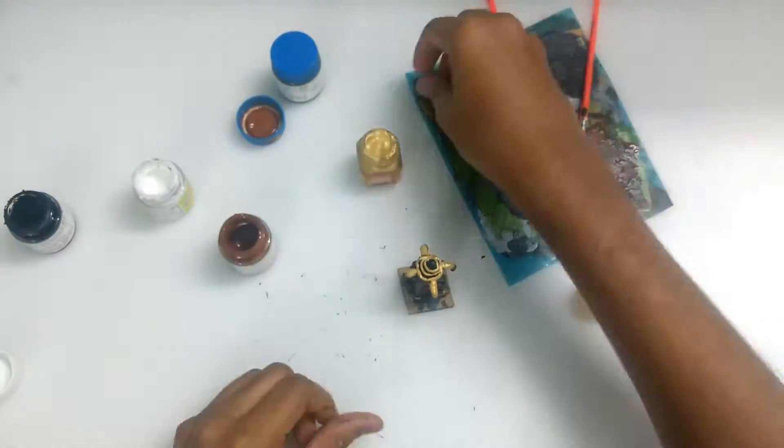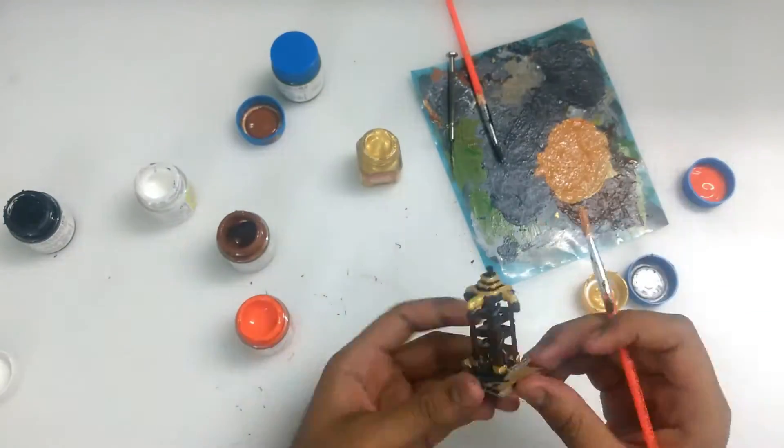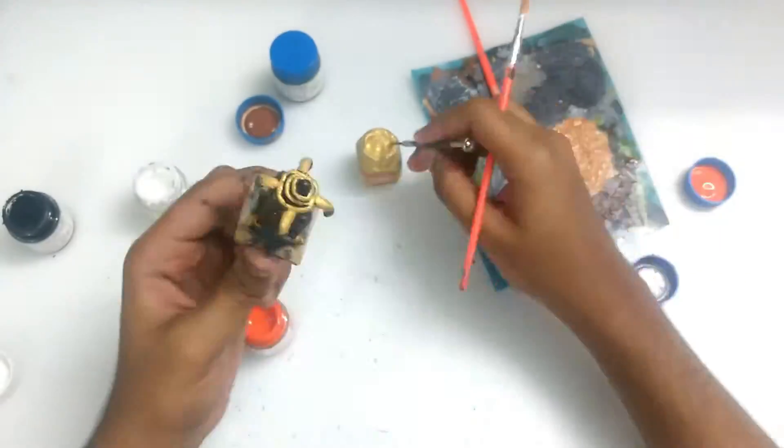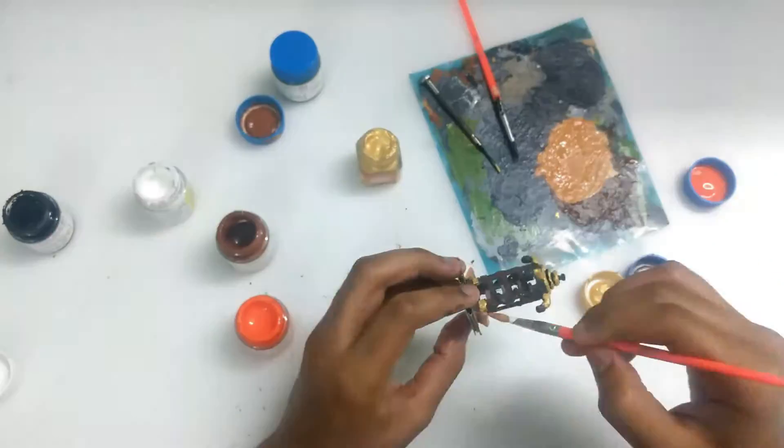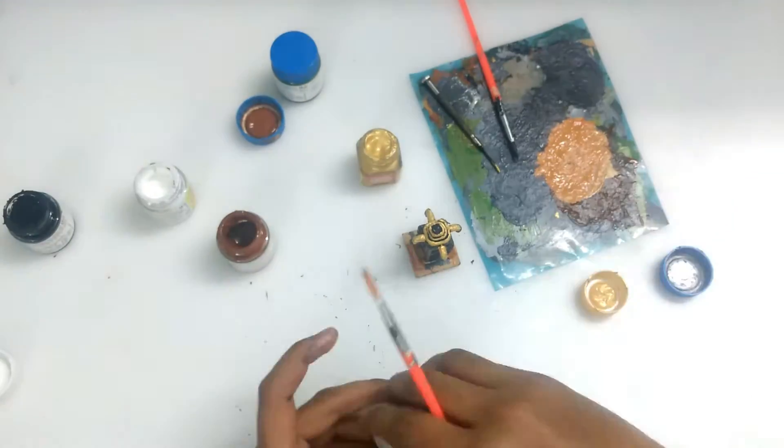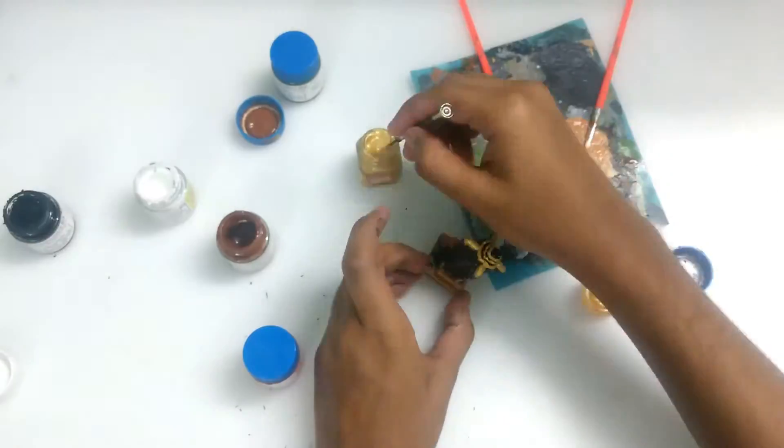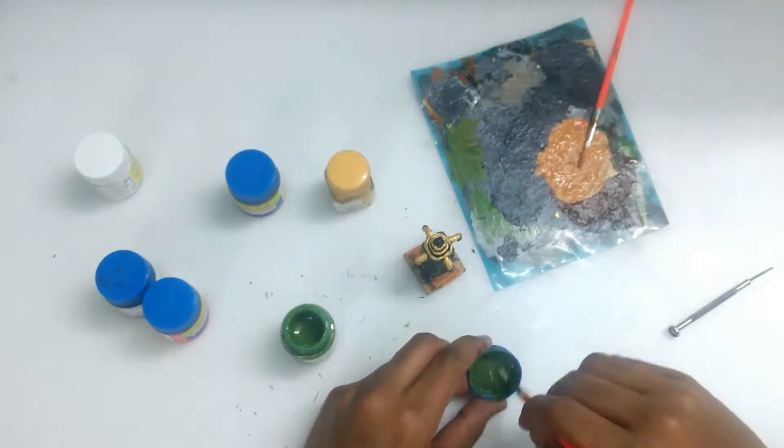I'm sure that now you're getting an idea of what to do and how to do it. That's the peach color that you need for the edges. Even if the base gets dirty there's nothing to worry about because we're going to cover it with the sap green color as you can see.